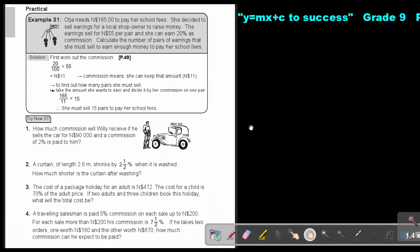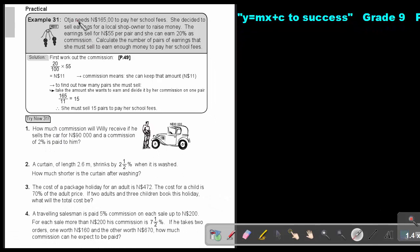Let's look at the practical example. Oja needs this amount to pay her school fees. She decided to sell earrings for a local shop owner to raise money. The earring sells for 55 per pair, and she can earn 20% commission. Calculate the number of pairs of earrings that she must sell to earn enough money to pay her school fees. First work out the commission: 20 out of 100 times 55, so $11 is her commission. To find out how many pairs she must sell, just take the 165, the amount she must earn, divide by 11, and she must sell 15 pairs to pay her school fees.